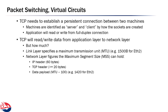TCP needs to establish a persistent connection between two machines. We typically describe them as server and client — not to imply anything about the type of machine, but just the relationship: the server opens a connection to listen for incoming requests, while the client opens a connection to a server that is listening. That's the only distinction in that definition.